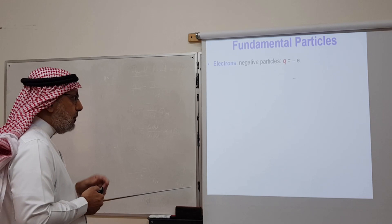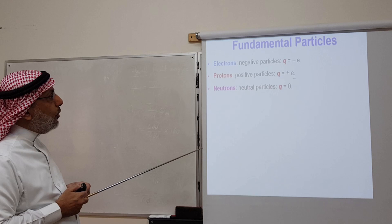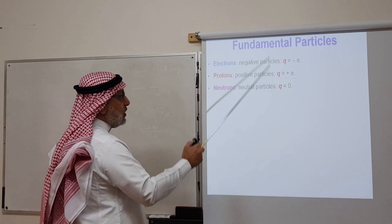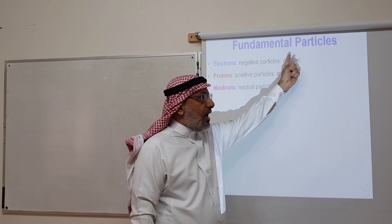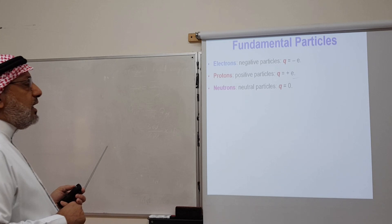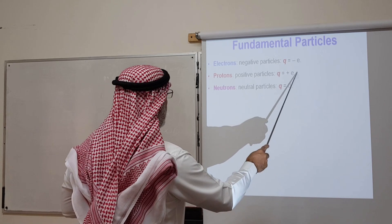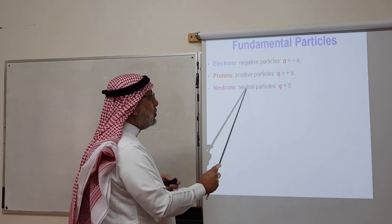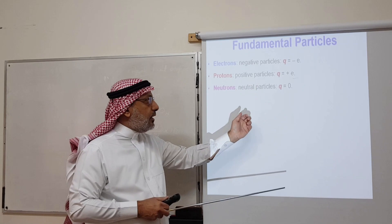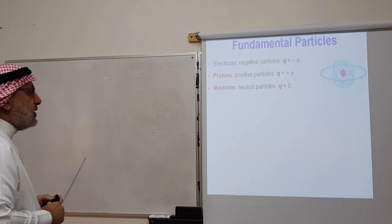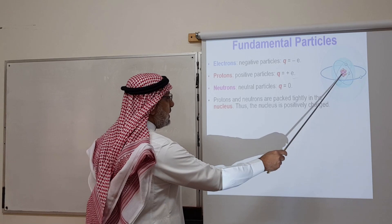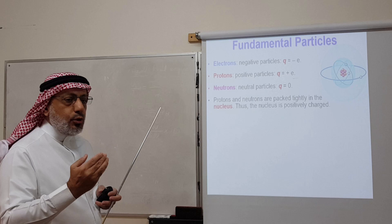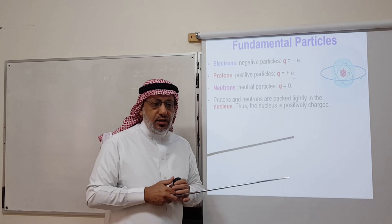Matter is made up of electrons, protons, and neutrons. Electrons carry negative charge; the charge of an electron is minus e, where e equals 1.6 times 10 to the minus 19 coulombs. Protons have the same magnitude of charge as electrons but it is positive. Neutrons carry no charge — the word 'neutron' comes from neutral. Protons and neutrons are packed tightly inside the nucleus, while electrons are attracted to the nucleus and orbit around it.